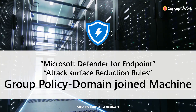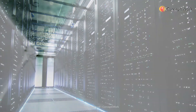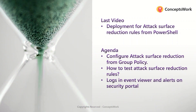Hi everyone, hope you're all doing well. Welcome back to our channel. In this video I'm going to talk about how to configure attack surface reduction rules with the help of group policy. In the last video we discussed deployment of ASR rules from PowerShell. In this video we'll see how to deploy through group policy, how to test ASR rules, and how to check logs in Event Viewer and alerts on the security portal.